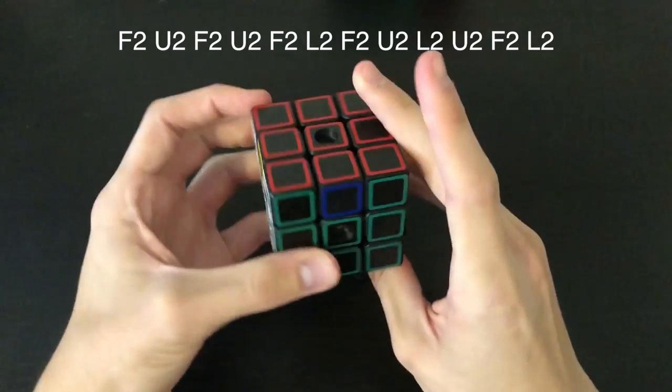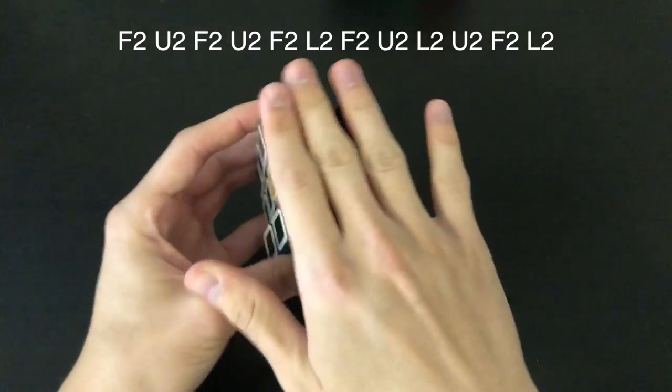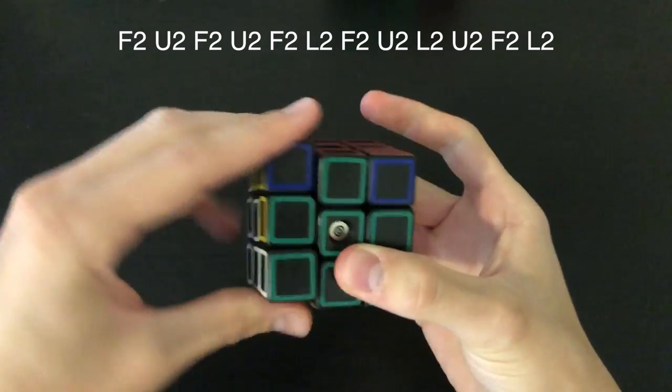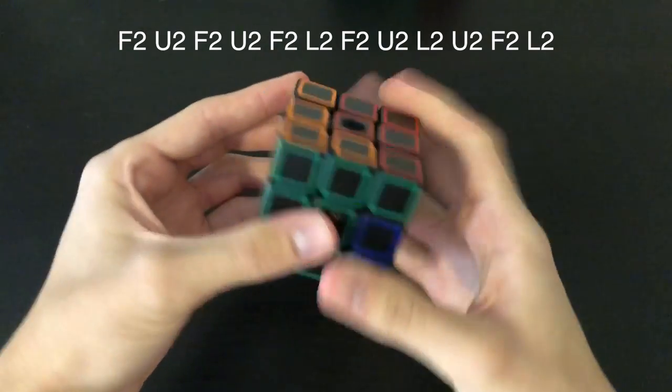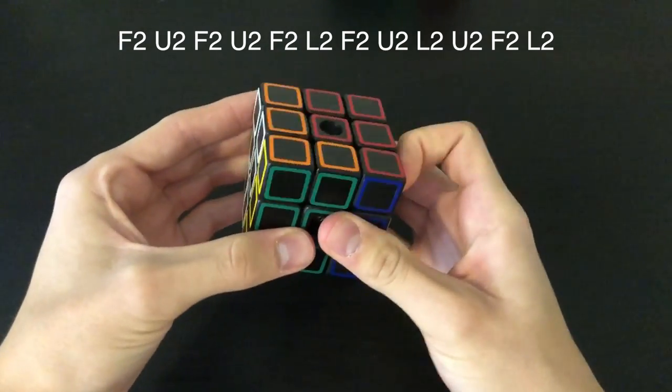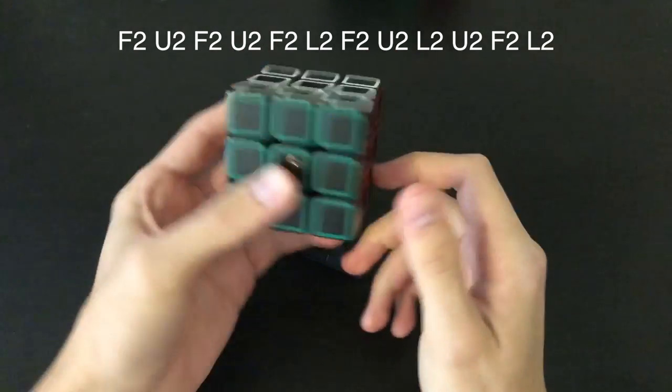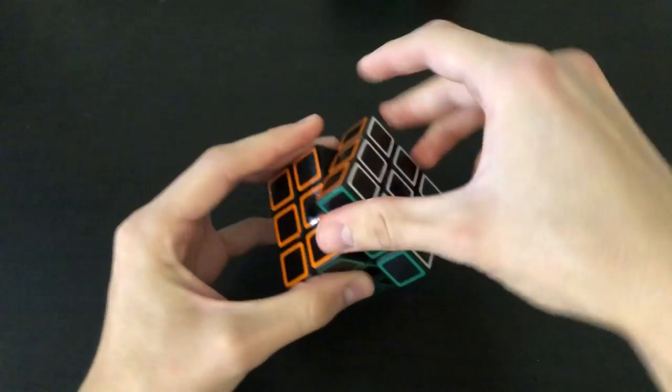The H perm is, with the H perm on top, F2U2, F2U2, U2, F2, L2, F2U2, L2, U2, U2, F2, L2. So I find that very helpful. I'll have that down below. And let's go ahead and take a look at the pieces.